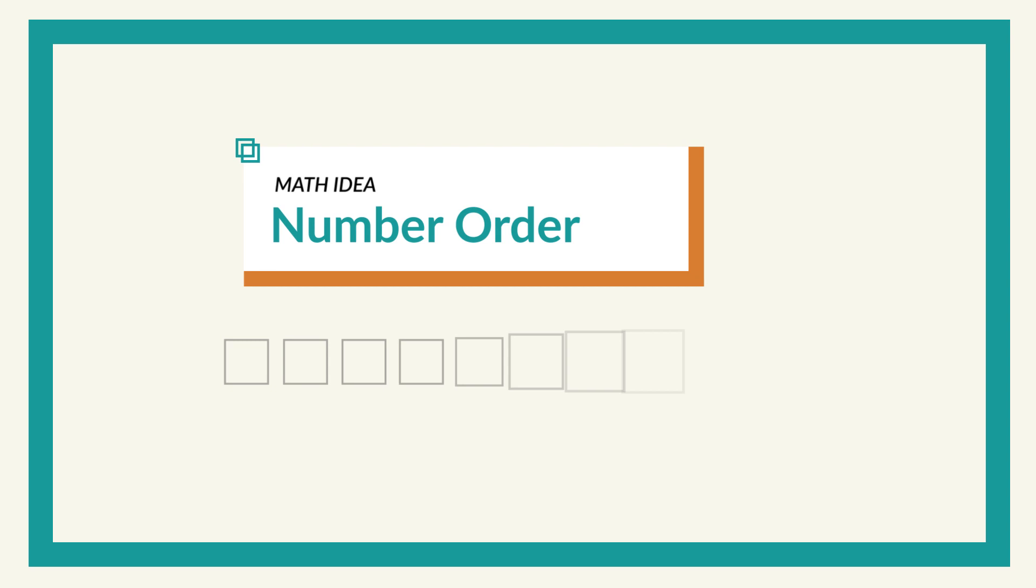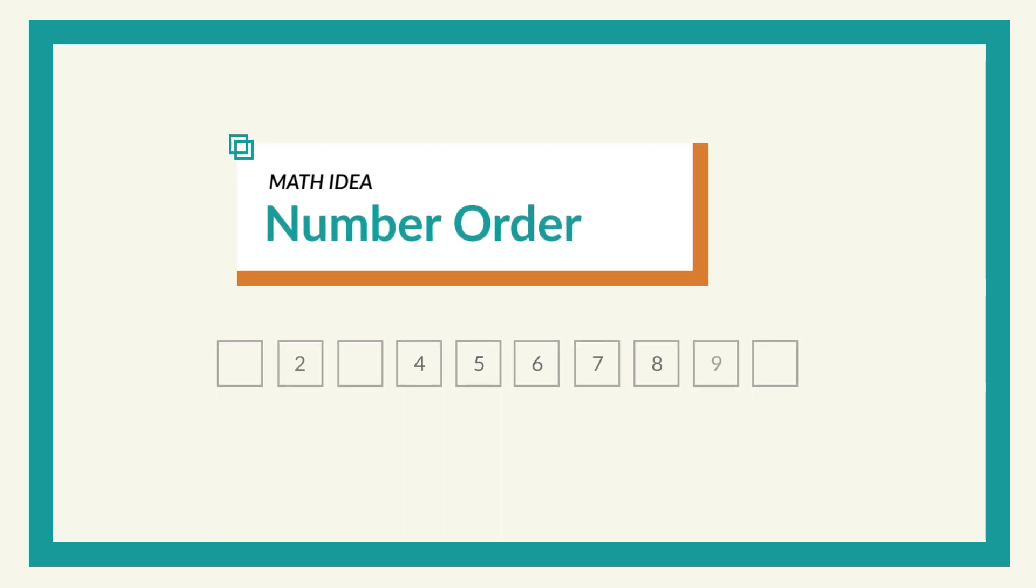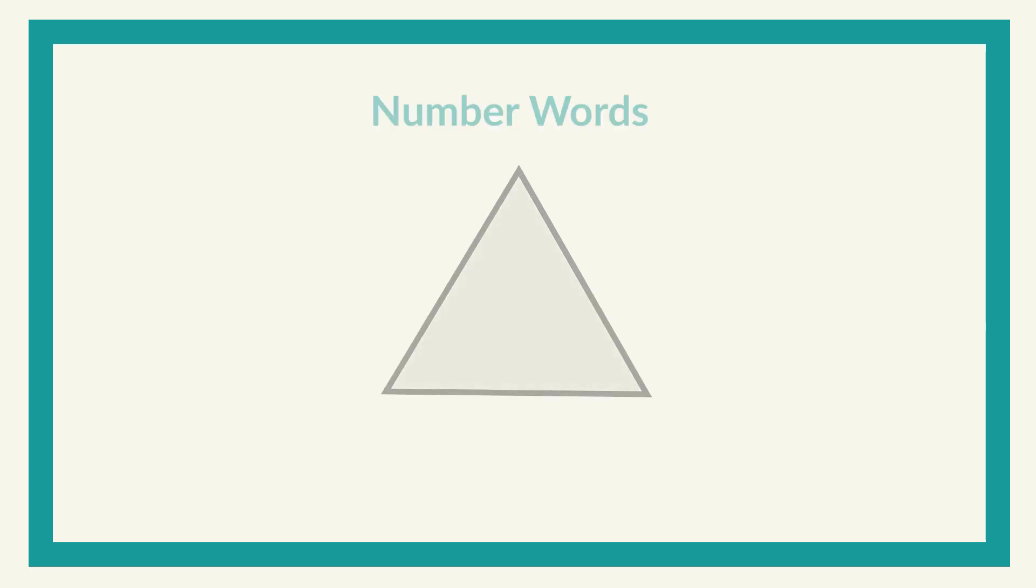Knowing which number comes next and which one comes before is a fundamental early counting skill. Children often start learning about number order by reciting number words and learning the order of the words. One, two, three.